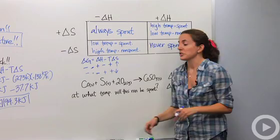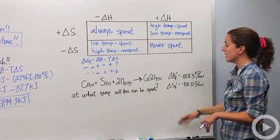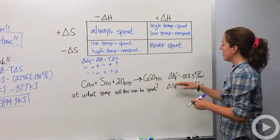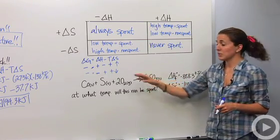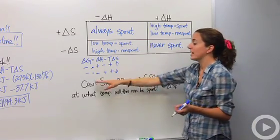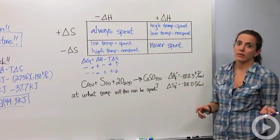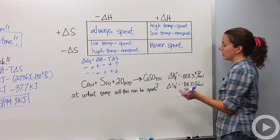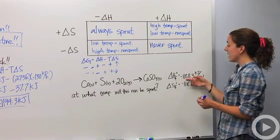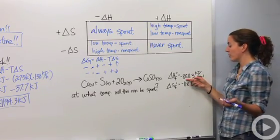Sometimes you might come across a question like this: cobalt plus sulfur plus oxygen gas forming cobalt(II) sulfate. This is a formation reaction where the compound is formed from its elements — that's the subscript F. At standard conditions (superscript zero), it is exothermic, releasing 888.3 kilojoules per mole.